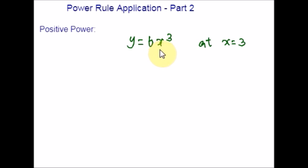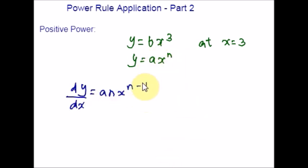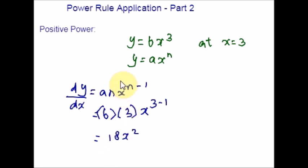The function obviously fits the first part of the power rule — it has a coefficient and an exponent. You can write the standard form of the equation and compare to find what a and n are. A is the coefficient; here a = 6. N is the exponent; here n = 3. Using these values in the second part of the power rule, you plug in a and n into the formula, giving us the derivative dy/dx = 18x².